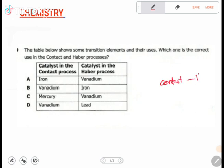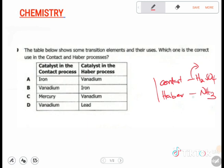While the Haber process is used in the manufacture of ammonia. So which catalyst do we use to manufacture sulfuric acid at industrial level, and which catalyst do we use to manufacture ammonia at industrial level?